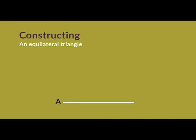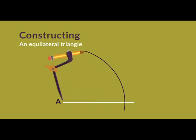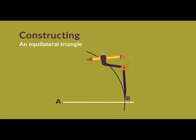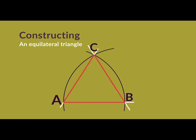To construct an equilateral triangle: Step 1, start with a straight line and mark a point A on it. Step 2, set the compasses to the desired side length and draw an arc through the line extending above it; mark the intersection on the line as B. Step 3, keeping the compass at the same length, place the point on B and draw an arc to intersect the first arc; mark the intersection C. Step 4, draw a straight line through A and C and another through B and C. Triangle ABC is an equilateral triangle.